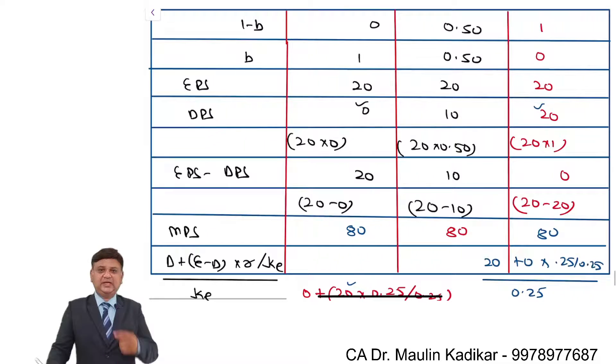Again we understand simply that as R and Ke are same, for any dividend payout ratio, MPS of equity share will remain same.